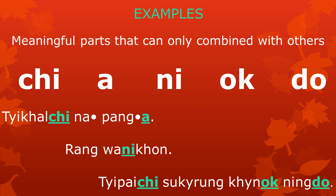Other meaningful parts cannot be used on their own, but only in combination with others. For example, the meaningful parts qi, a, mi, and oq. In these three sentences, you can see how these meaningful parts are used in words.